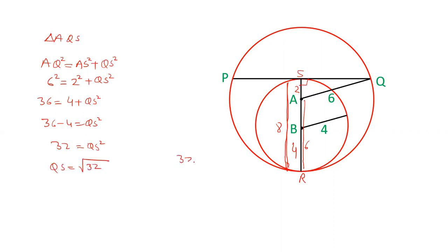The square root of 32 is 4 root 2. 2 and 2 is 4. We can write 2 times 2 root 2, that is 4 root 2. The length of QS is 4 root 2.